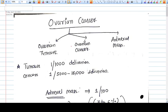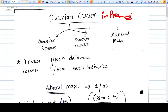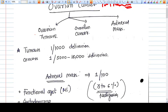Hello everyone, in this video we are going to talk about ovarian cancer in pregnancy. When we talk about ovarian cancer, we are generally talking about ovarian masses, even ovarian tumors. There are three types of ovarian masses: ovarian benign tumors, ovarian cancer, and adnexial mass.